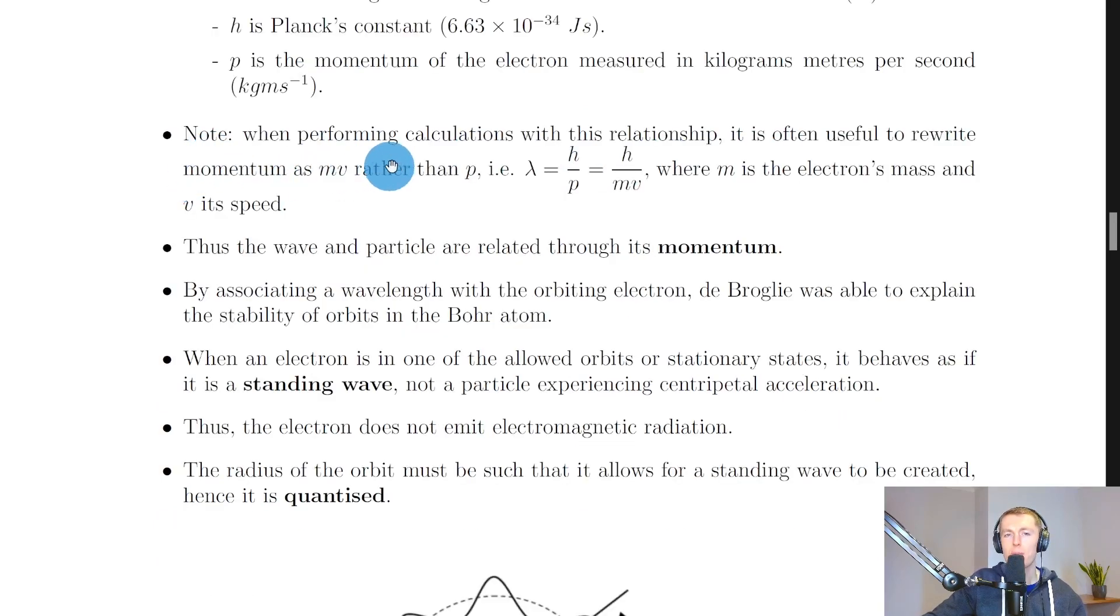A quick note is that when performing calculations with this relationship, it is often useful to rewrite momentum as M times V rather than P, i.e., lambda equals H over P is equal to H over MV. So we're just expanding the momentum term to give us mass times velocity, where M is the electron's mass and V is speed. And this is because typically you'll be given the electron's speed rather than just its overall momentum. So this form of the relationship can definitely help you.